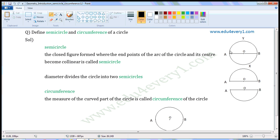So, we can say that diameter divides the circle into two semicircles. As AB is passing through O, it is diameter. So, diameter divides the circle into two semicircles.